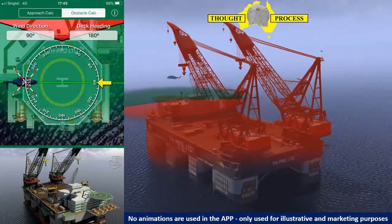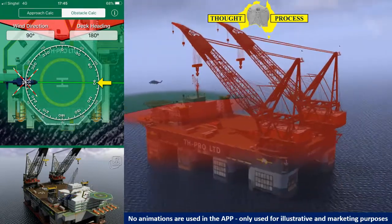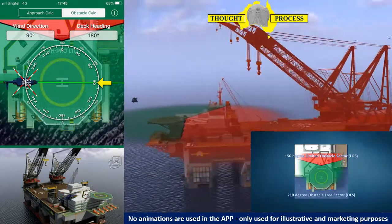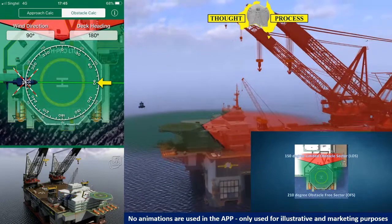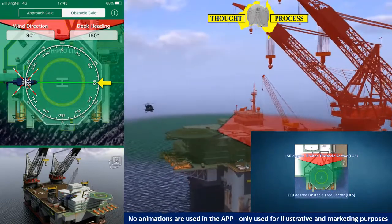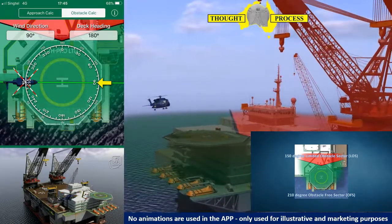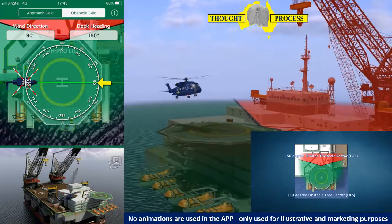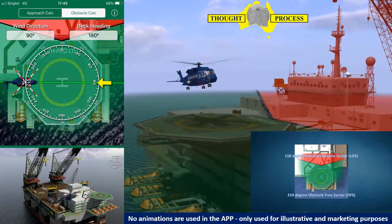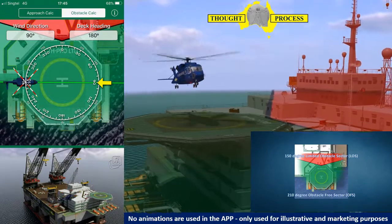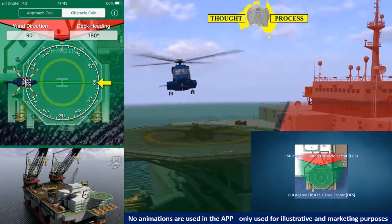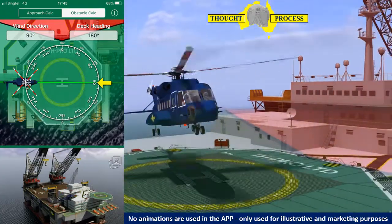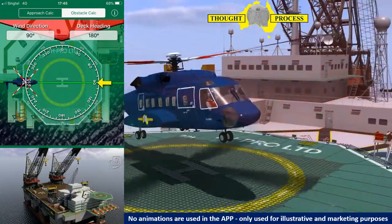The app is based on CAP-437 guidelines and has the 150-degree Limited Obstacle Sector (LOS), shown in red, and the 210-degree Obstacle-Free Sector (OFS), shown in green, superimposed on the deck. These two obstacle sectors are linked to the helideck heading.